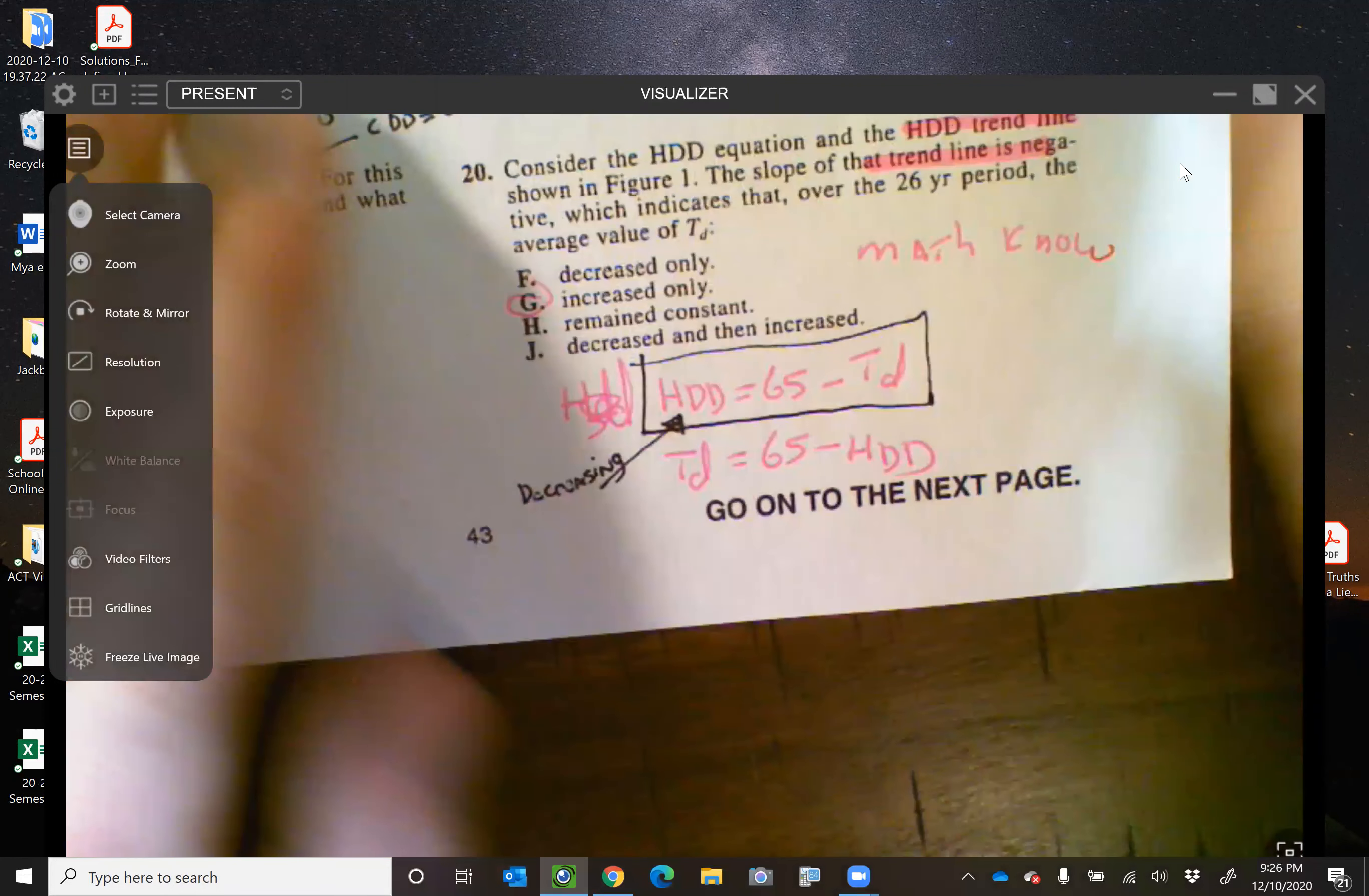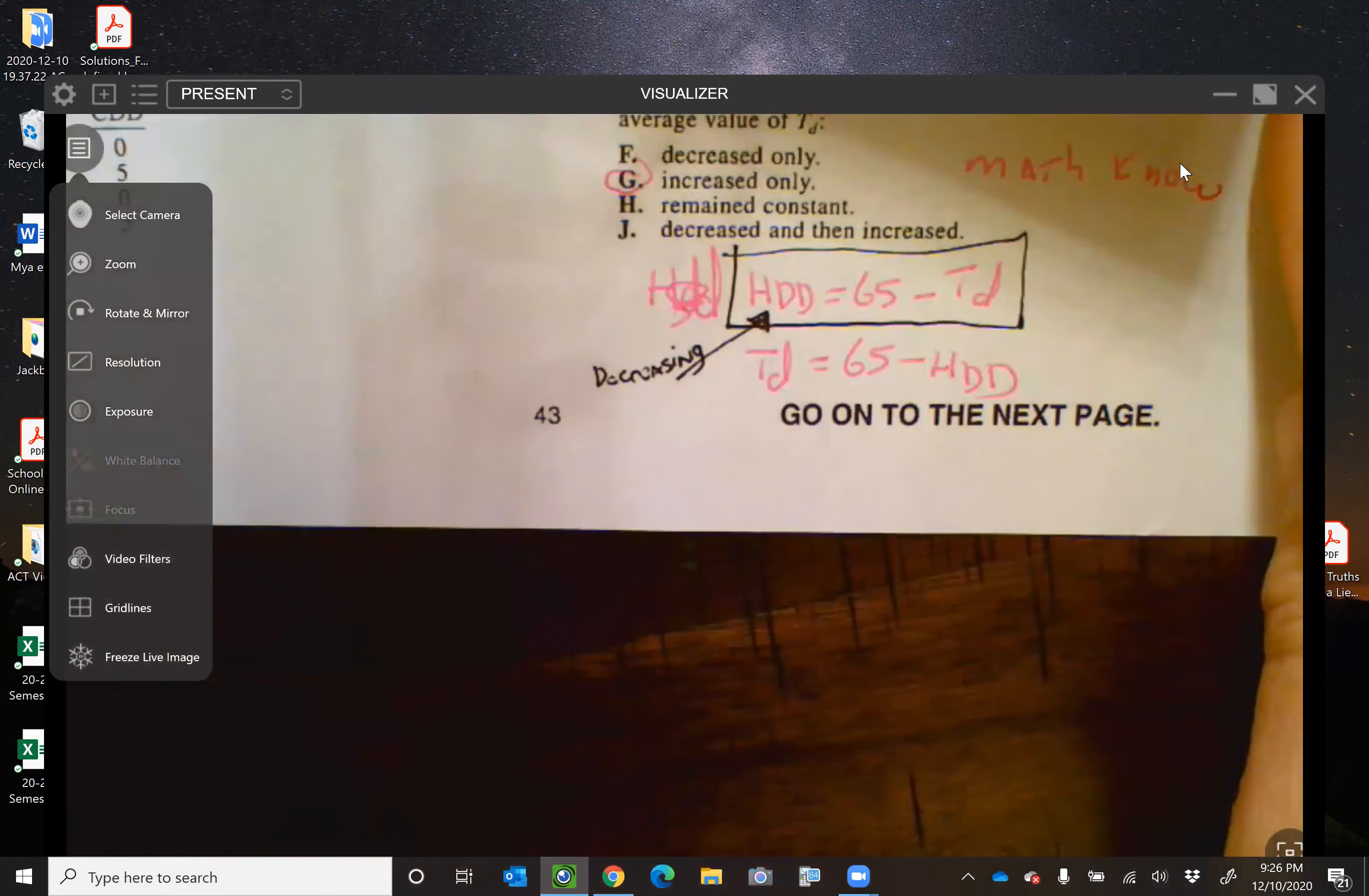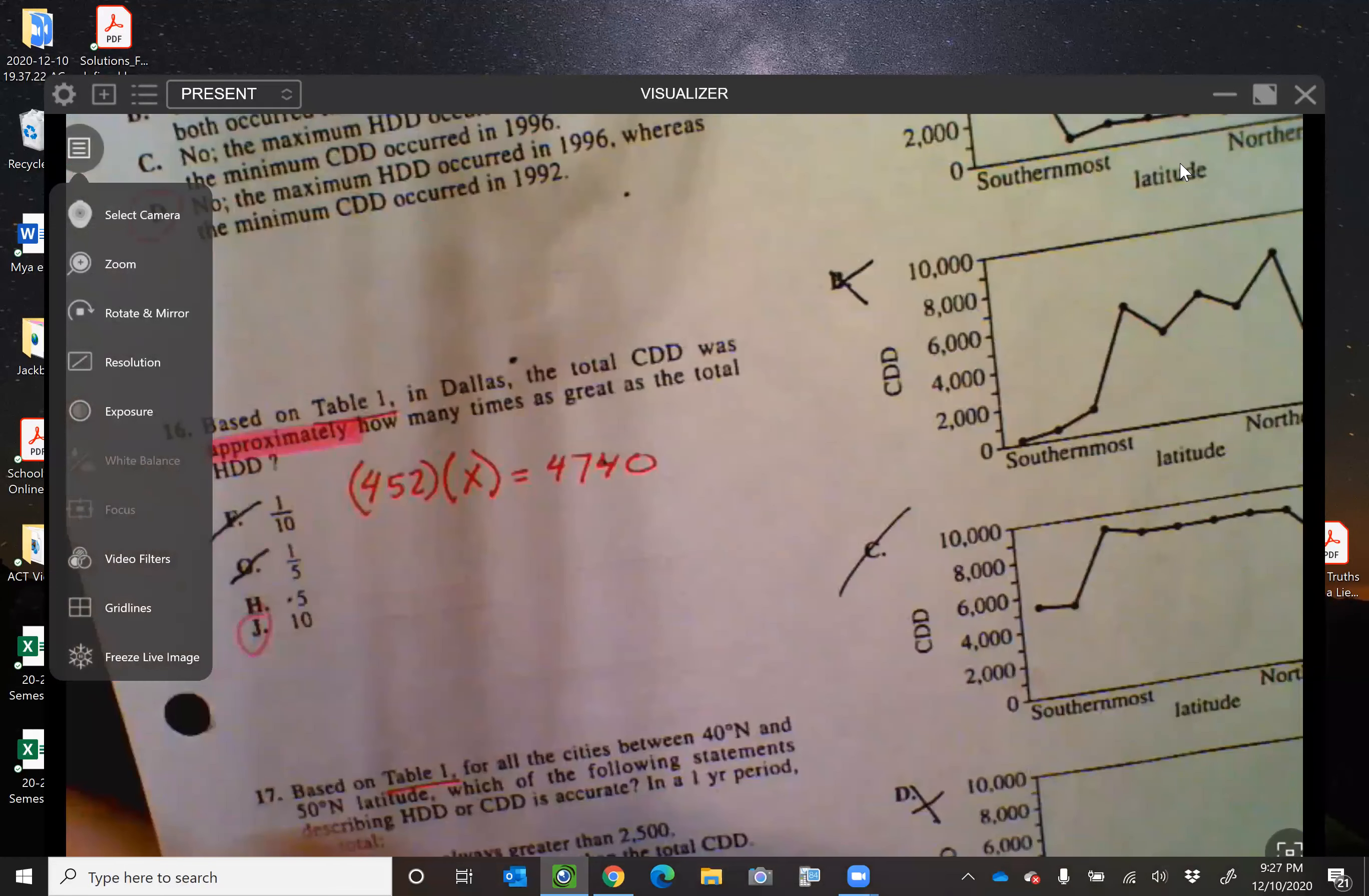And then the last one for us is number 20. It's math knowledge. These are the two. This is the formula that they gave us for it. And it says that the trend line in figure one, the slope of the trend line is negative. So that means that the HDD is decreasing over time. Barely, but it is decreasing over time. So if this answer is getting negative, well, then that TDD has to be getting bigger than 65, because we'll be subtracting more and more and more. So TD must be increasing. It's kind of a math knowledge question. I like that one. All right. Anyone have any questions on this passage at all?